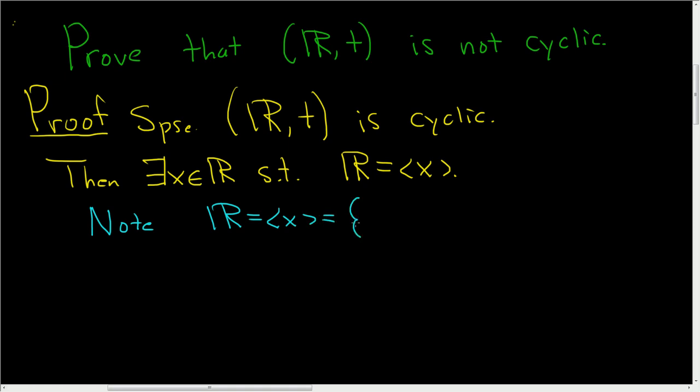This is the set of all powers of x. Now you have to keep in mind that the operation here is addition. So what is a power of x? Well, x is a power of x, it's 1 times x. x plus x, that's a power of x, because it's 2 times x. x plus x plus x, that's 3 times x. That's a power of x, because it's 3 times x, and so on.